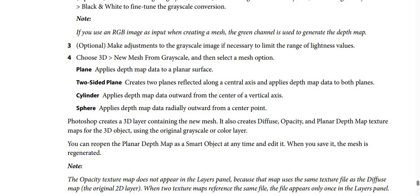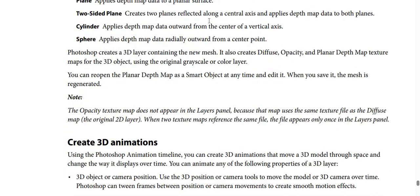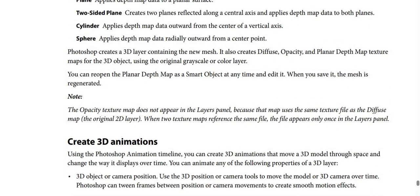Step 3: Make adjustments to the grayscale image if necessary to limit the range of lightness values. Step 4: Choose 3D > New Mesh From Grayscale, then select a mesh option. Options include: Plane — applies depth map data to a planar surface; Two-Sided Plane — creates two planes reflected along a central axis and applies depth map data to both; Cylinder — applies depth map data outward from the center of a vertical axis.